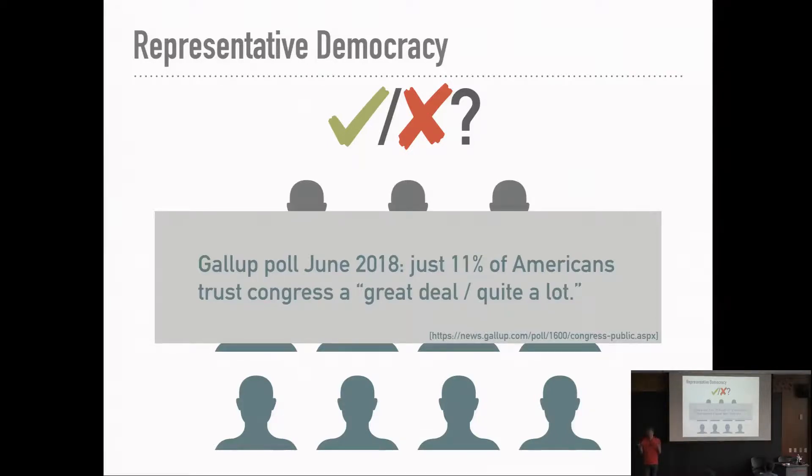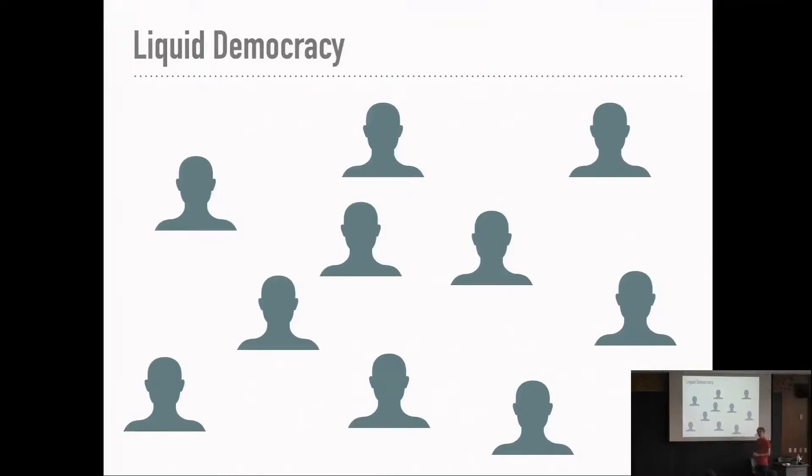Maybe what you would look for is something in between the two systems. It feels like this system is too rigid maybe. There's too much of a separation between these representatives and the population, whereas direct democracy was nice, but it's just way too demanding. Maybe there's something in between that we can do. People trust themselves.